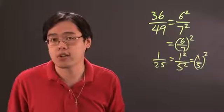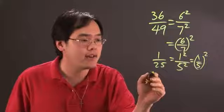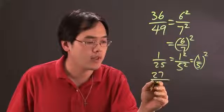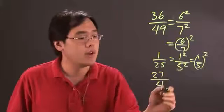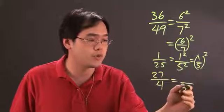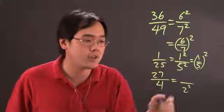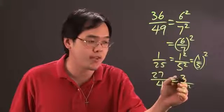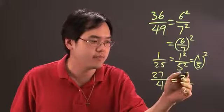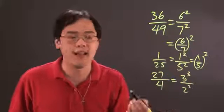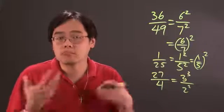Now is every fraction like that? Of course not. If you have 27 over 4, 4 is a perfect square because it's 2 squared. But 27 is not a perfect square. So it's, in fact, it's 3 cubed. But I cannot write that as a perfect square.